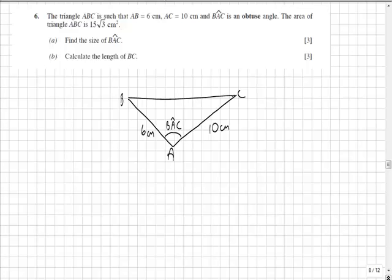I've drawn it out showing that BAC is in fact an obtuse angle and I can now use the formula area of a triangle is equal to a half AB sine C for when you've got an obtuse angle and two sides that make that angle.